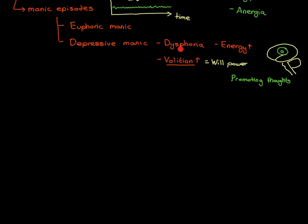In someone with a depressive manic episode, they're going to have low mood, high energy, and accompanying the high energy, high volition — their brain is going to promote up thoughts at a ridiculously easy level. This gives a huge number of symptoms that I now want to talk through, all under this category of increased volition. You can also describe these symptoms under the heading psychomotor agitation — psychological and motor system agitation, meaning being able to think, speak, and move very easily and doing it too much.